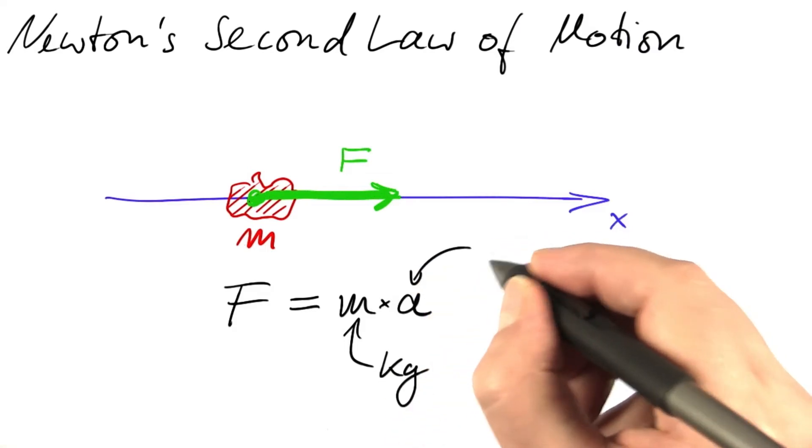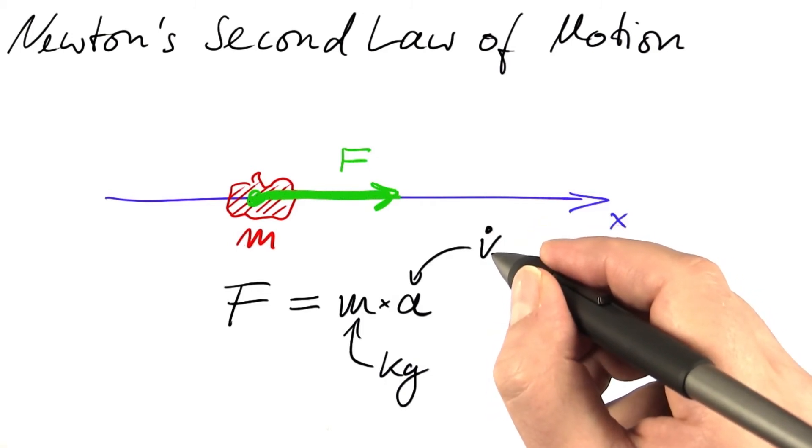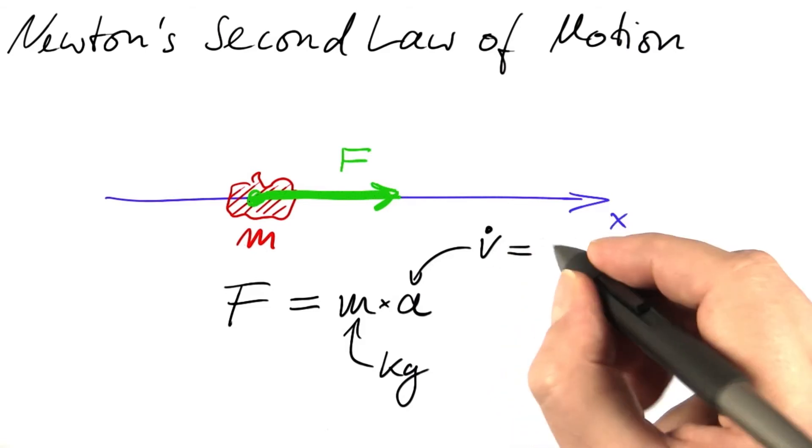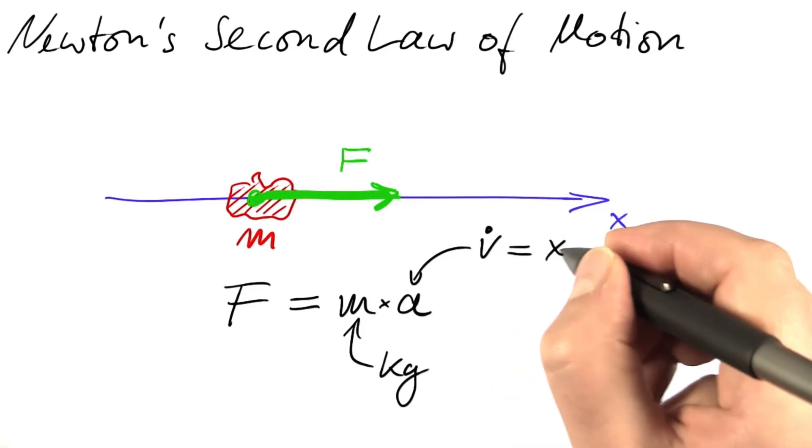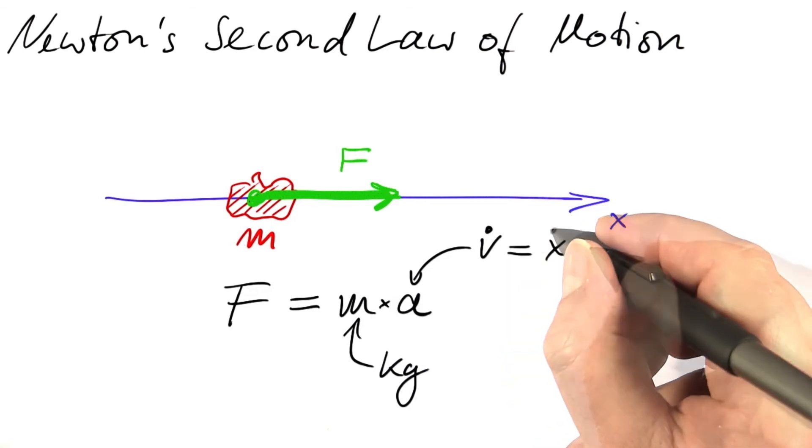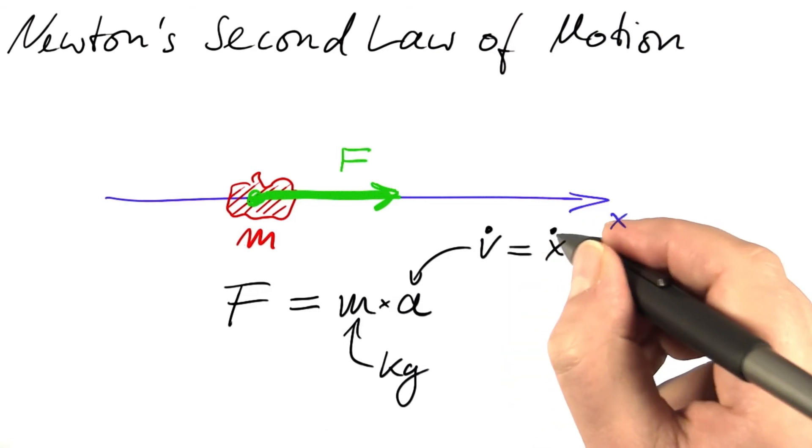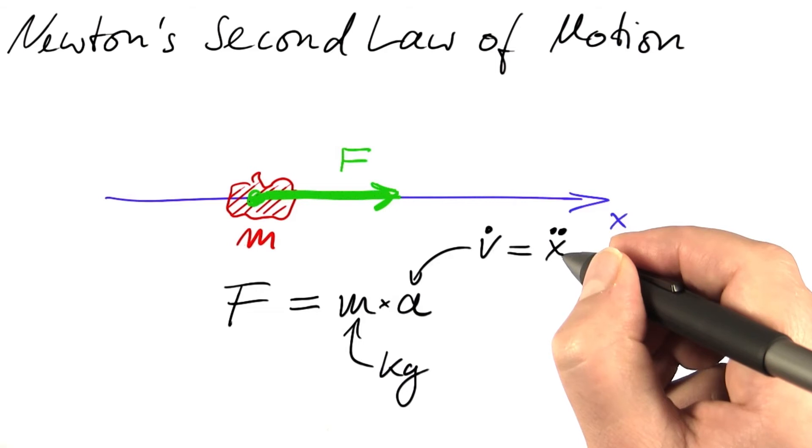Acceleration is the rate of change of velocity, V dot, the derivative of the velocity with respect to time, or as velocity is the derivative of position with respect to time, the derivative of the derivative of the position with respect to time.